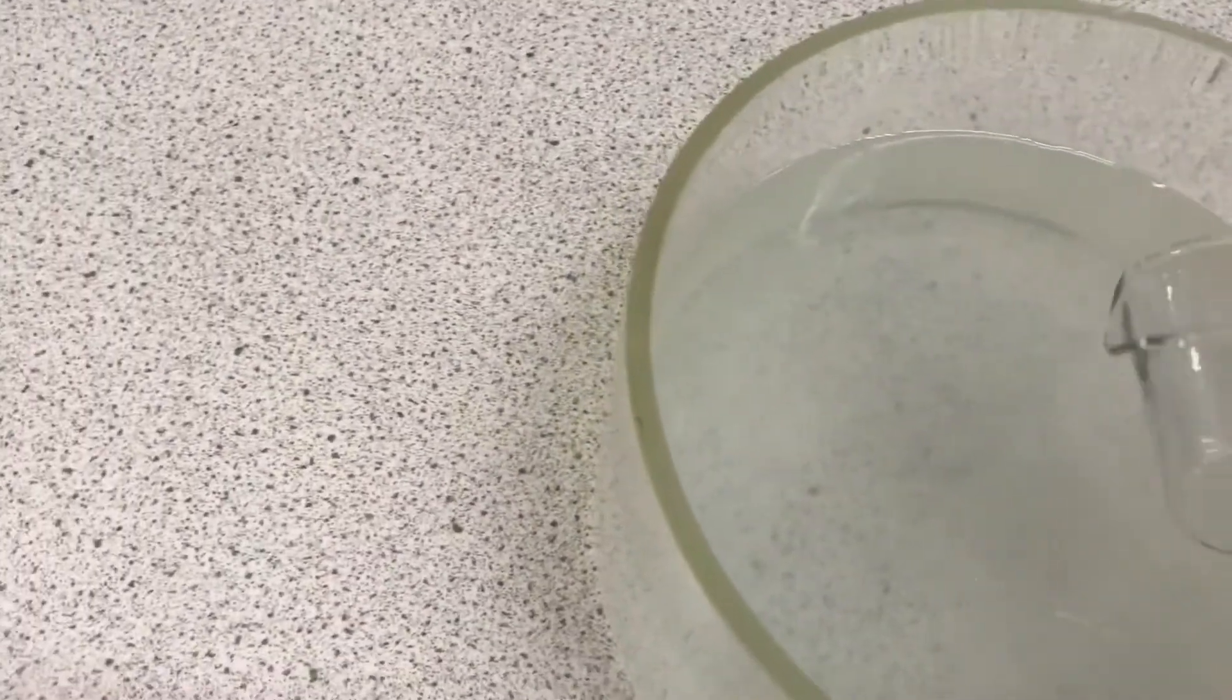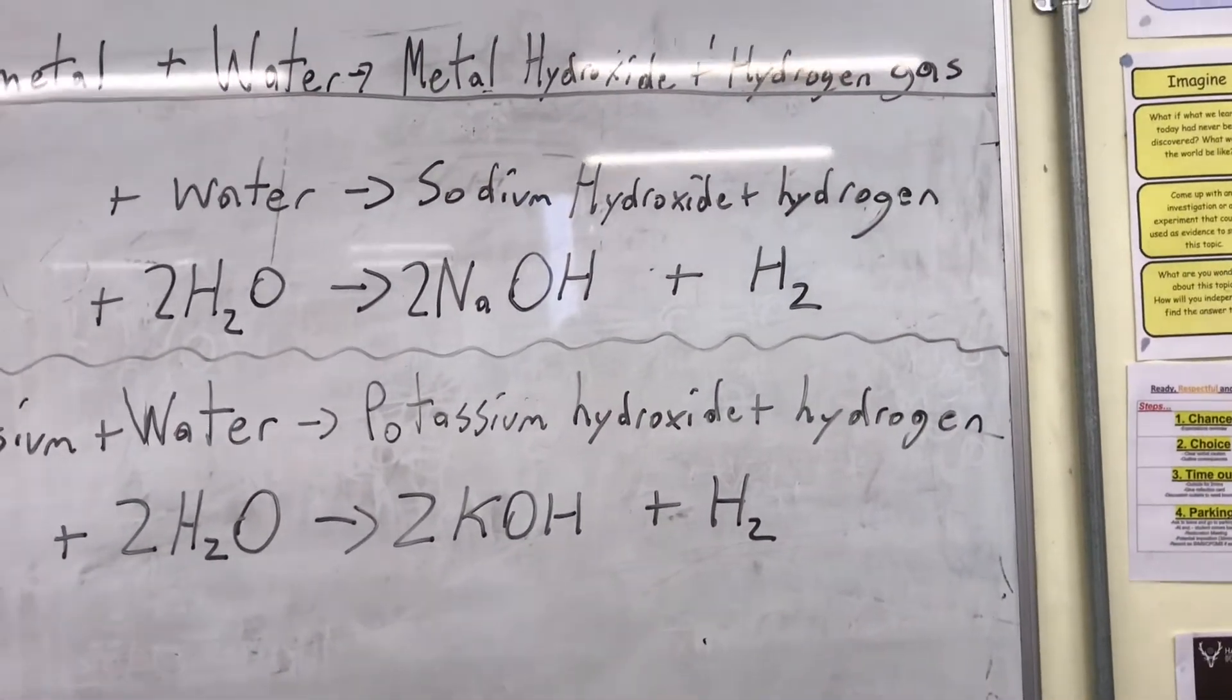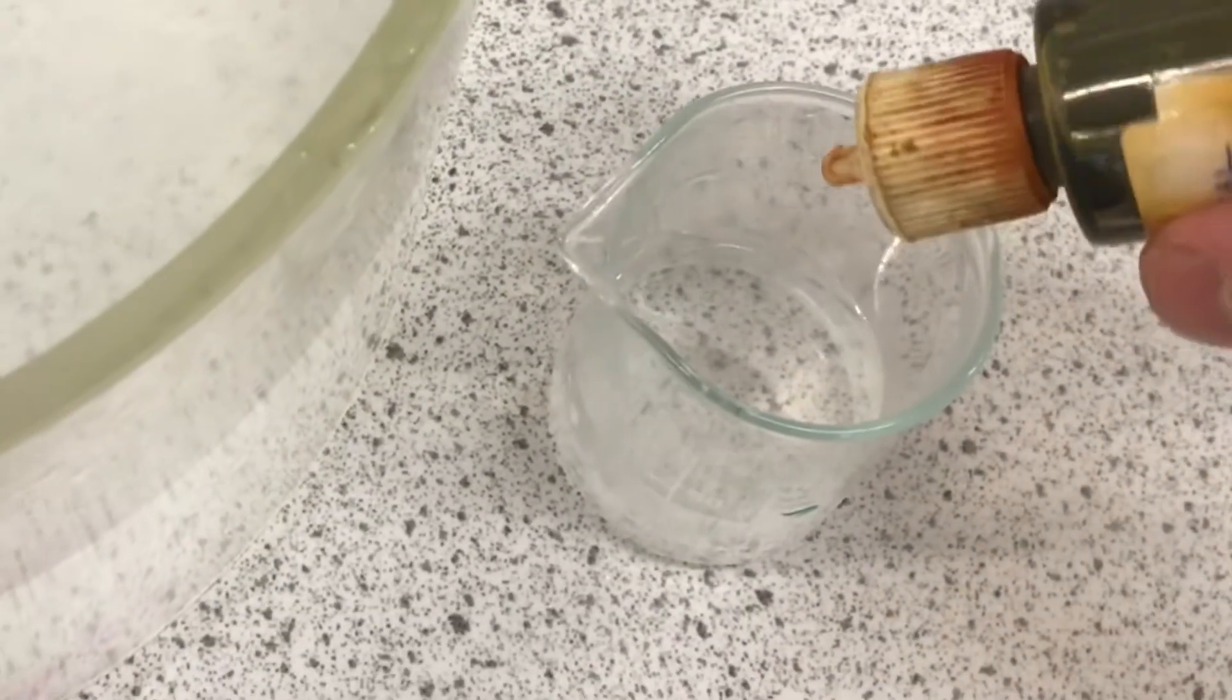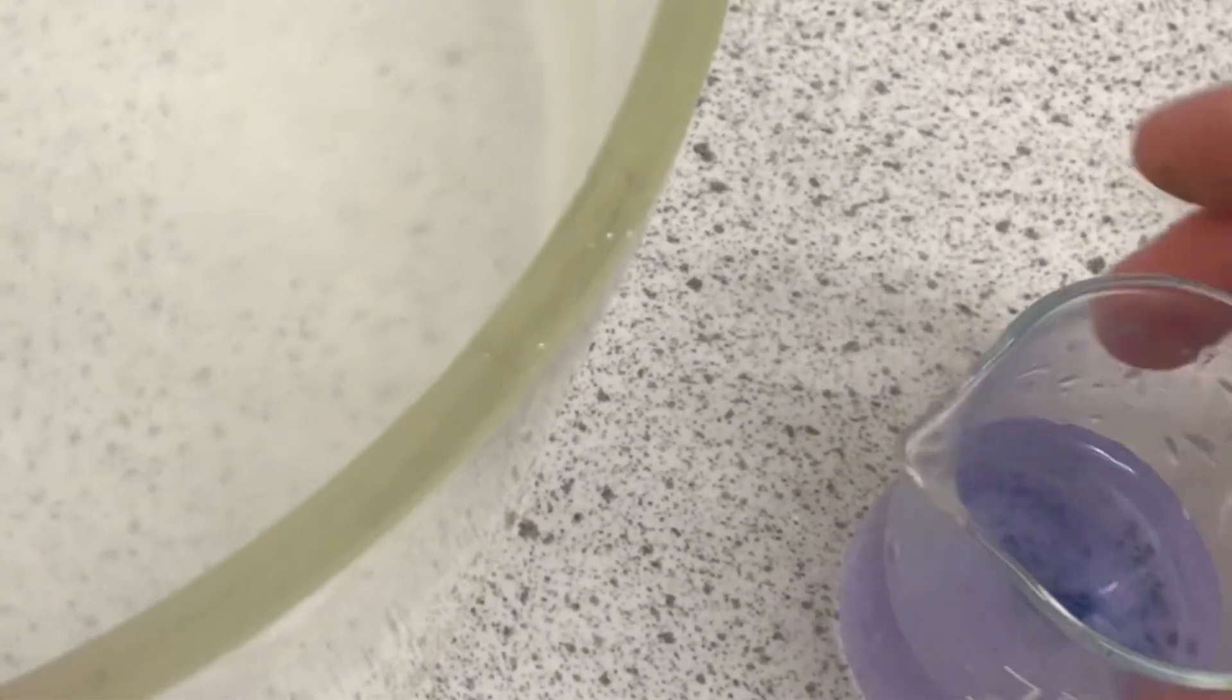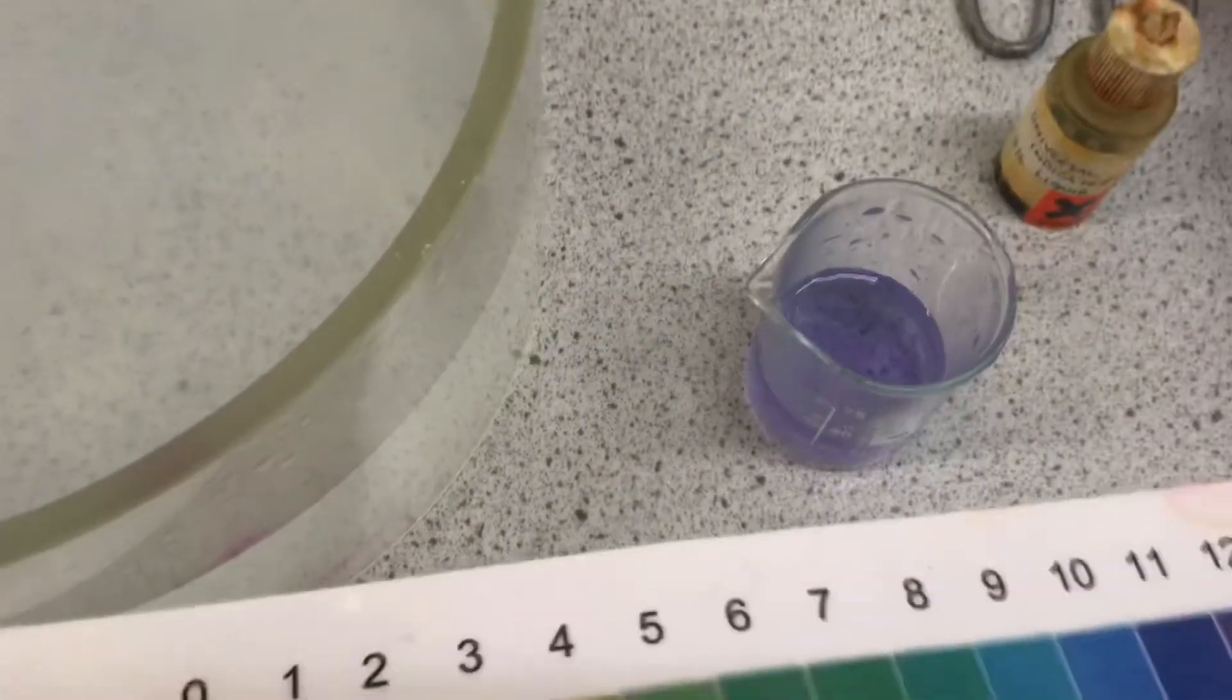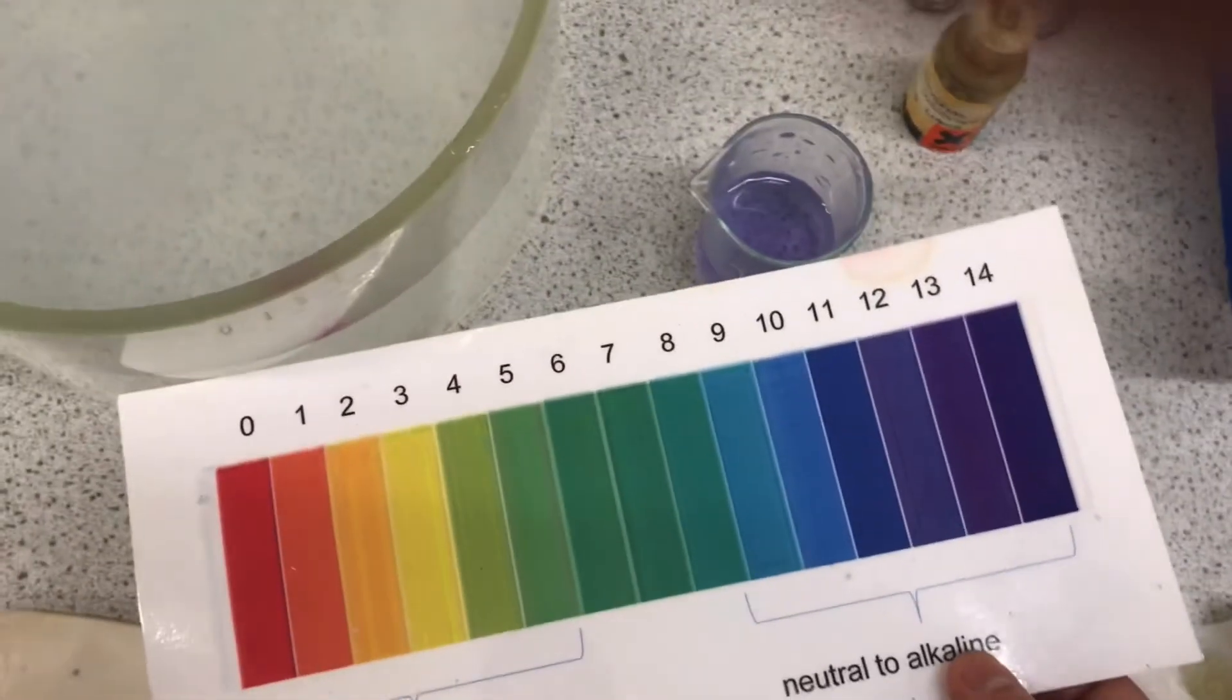Now, I'm going to take a small beaker and fill it with the liquid that I reacted my alkali metals in. So, this liquid will contain sodium hydroxide, potassium hydroxide, and lithium hydroxide. We'll now put the universal indicator into the small amount of liquid I collected. As you can see, it turns purple. Now, when we match this to our pH chart, it has a pH of around 12, meaning it is an alkaline solution.